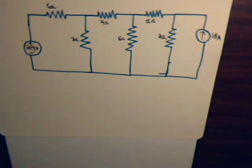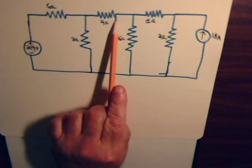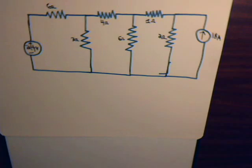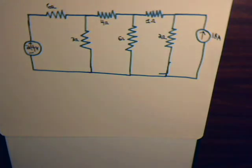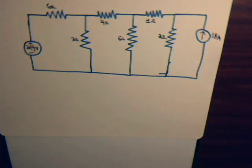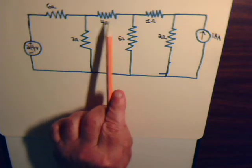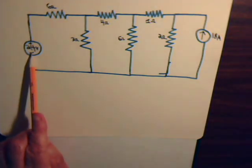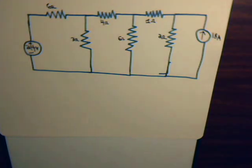We're going to split the problem up into two parts. For the first portion, we're just going to ignore the current source, and see if we can determine what is the current flow through this resistor due to this voltage source. Then for the second part of the problem, we'll just ignore this voltage source — just draw a line right through it as if it's not there — and see if we can determine what is the current flow through this resistor from the current source. Finally at the end, we just add the two results together to determine the total current flow through this resistor due to the voltage source and the current source acting together. So let's get started by ignoring the current source.